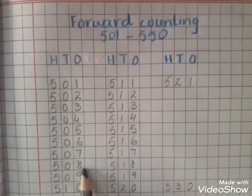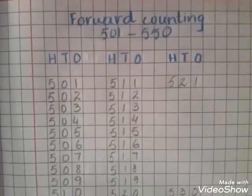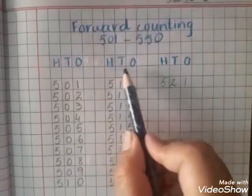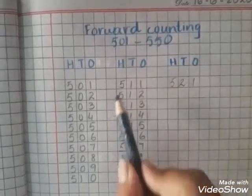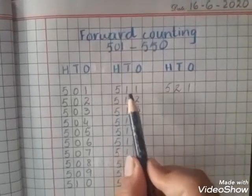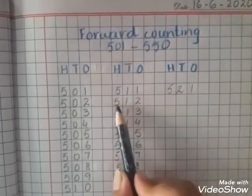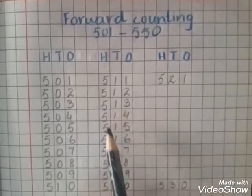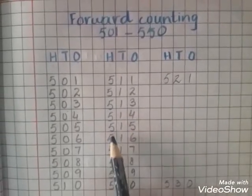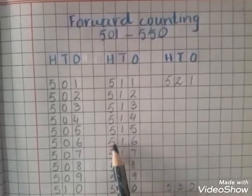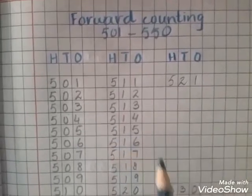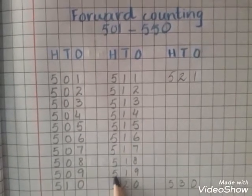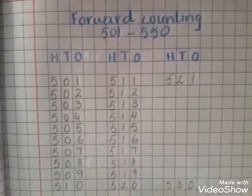Then again write H T O — hundreds, tens, and ones. Now 5 stands for hundreds. Then continue: 511, 512, 513, 514, 515, 516, 517, 518, 519, 520.